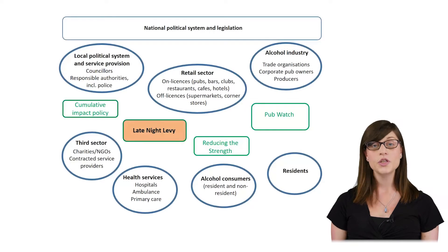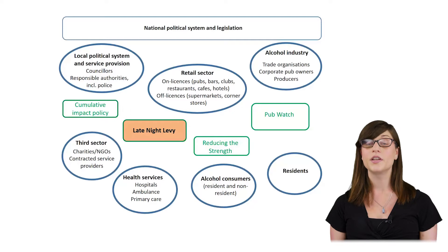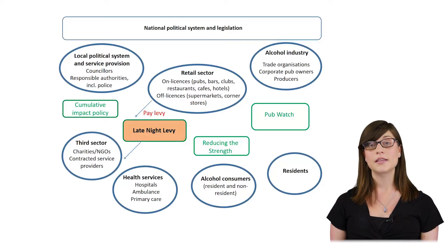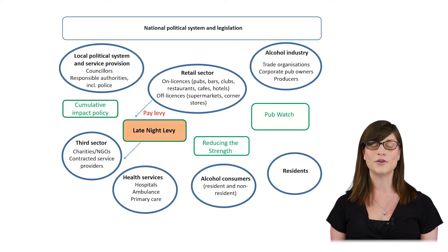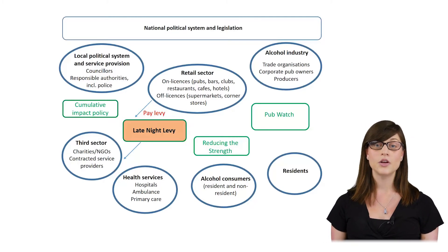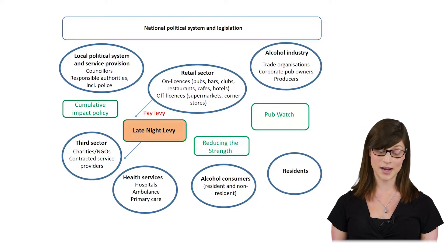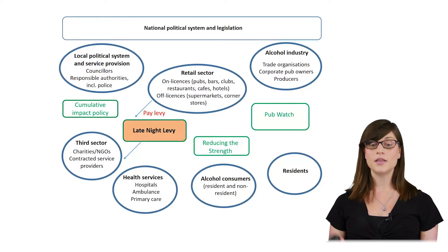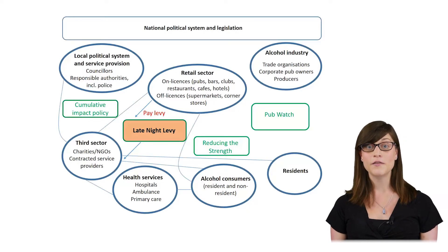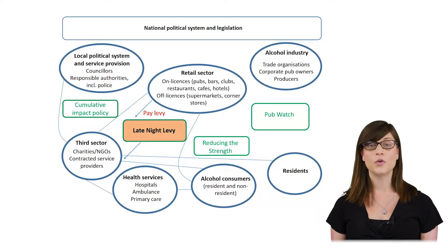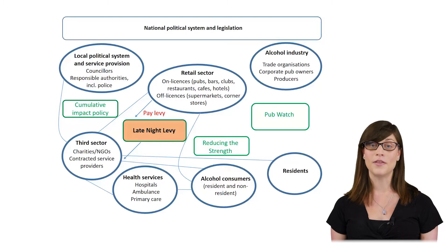A systems perspective can also be used to look at the ways the levy changes how organizations or individuals behave within the system. The levy might facilitate new kinds of working — for example, in some local authorities it has been used to fund community safety patrols contracted out to private companies. This brings new actors into the system who then interact with all the other actors already there: licensing officers, the police, retailers, residents, and people who come to the local authority for a night out. As community safety patrols interact with retailers, retailers in response might change how they manage their venues and how they sell drinks, which then changes how people drink, having impacts on antisocial behavior, crime, and various health impacts related to alcohol consumption.